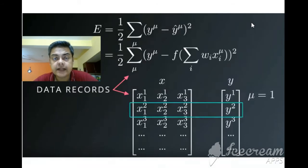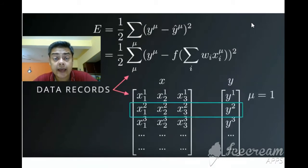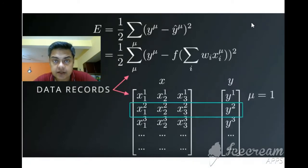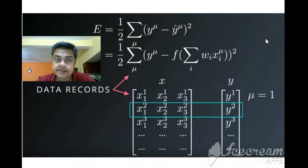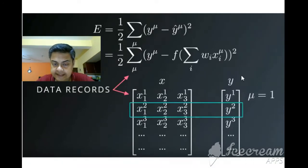The error e equals y-mu minus y-cap-mu, where y-mu is the actual outcome and y-cap-mu is the predicted outcome. Actual minus predicted gives the residual. We square the error, add the errors across all rows, and divide by half. This summation across rows is what the mu index represents.